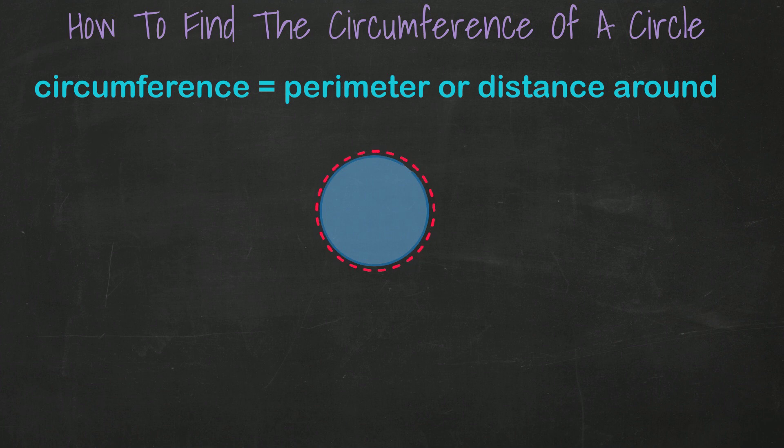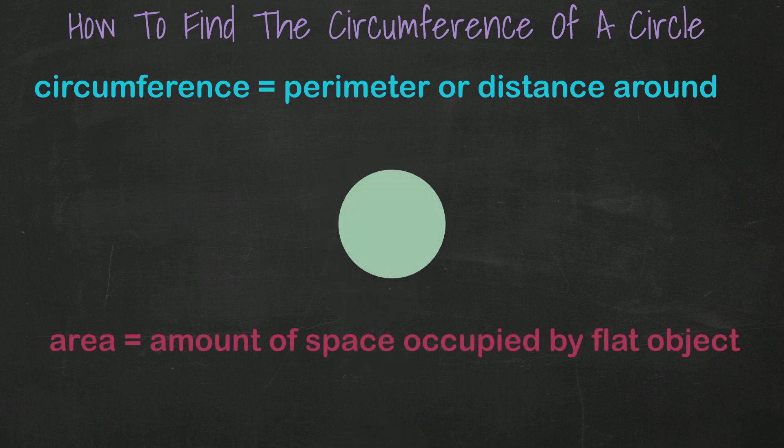The area of a circle is going to be the space inside of it, the shaded area of a flat, two-dimensional circle.